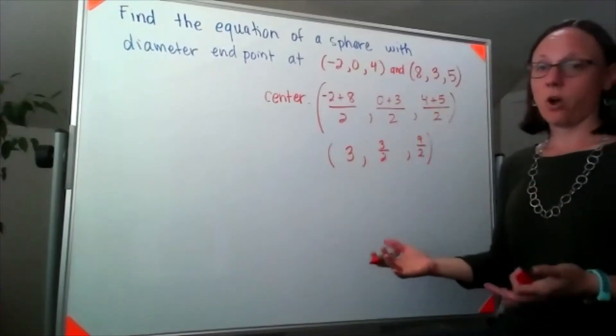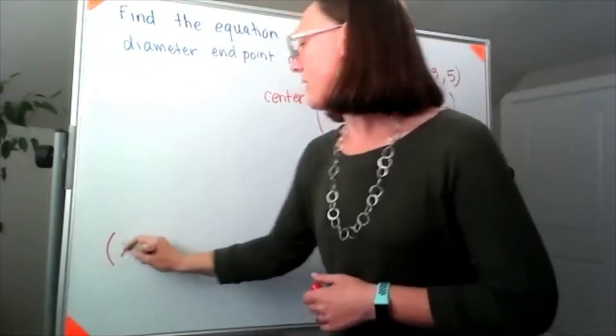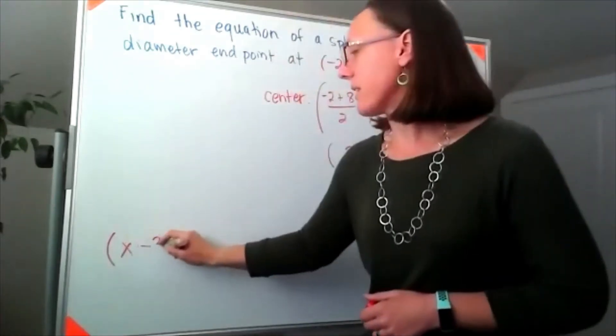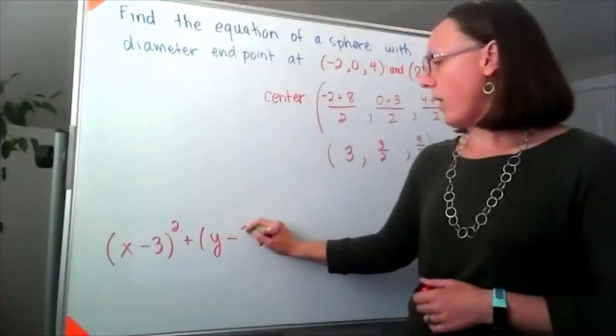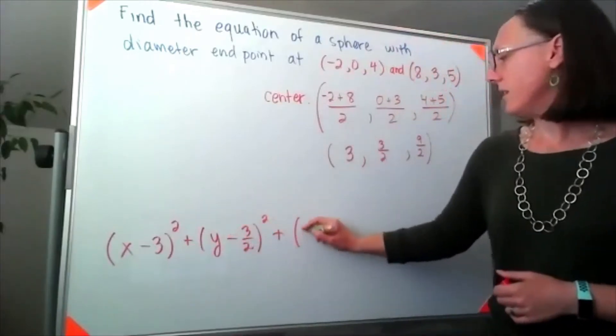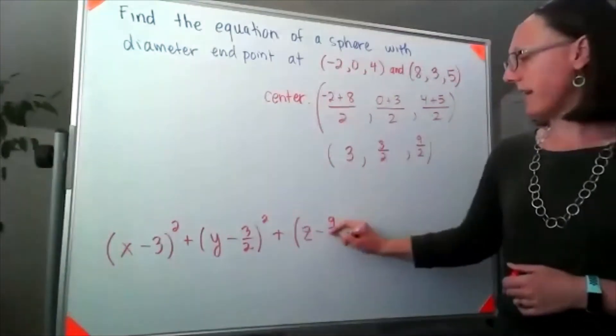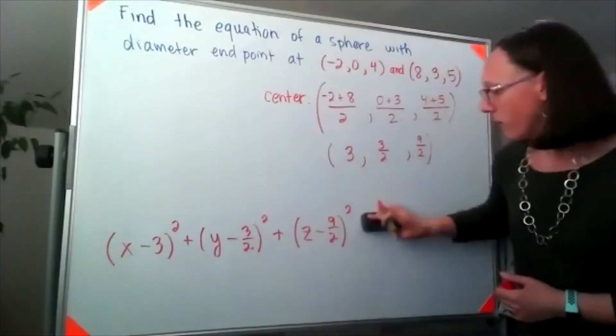So already I know that the form for my equation is going to look like (x minus 3) squared plus (y minus 3 halves) squared plus (z minus 9 halves) squared is equal to my radius squared.